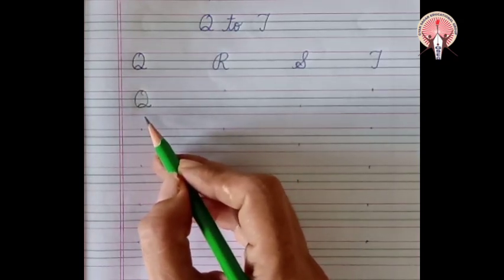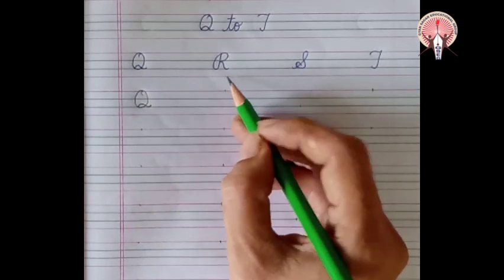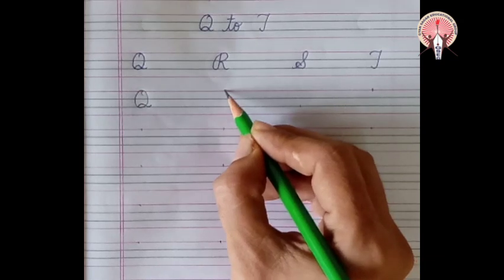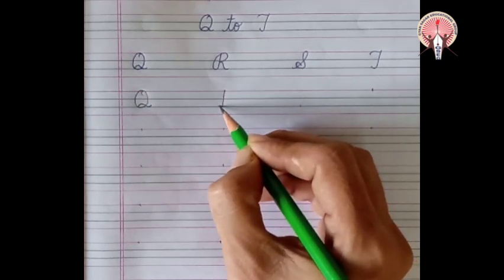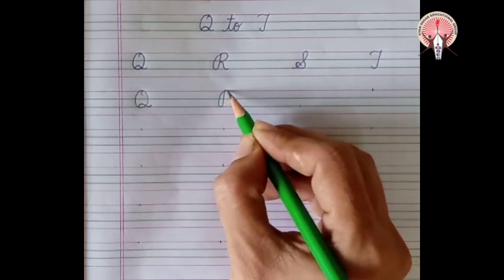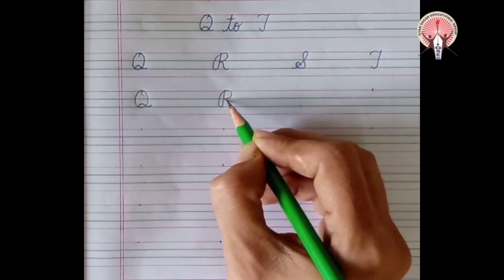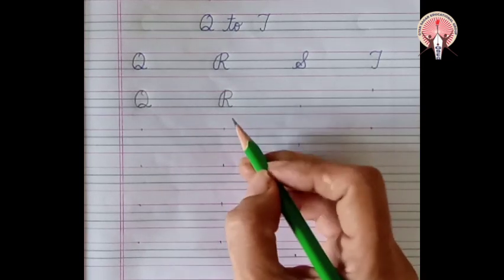Which letter comes after Q? R. R for Rat. Come down, go up with the curve. Make a right curve and come down. R.